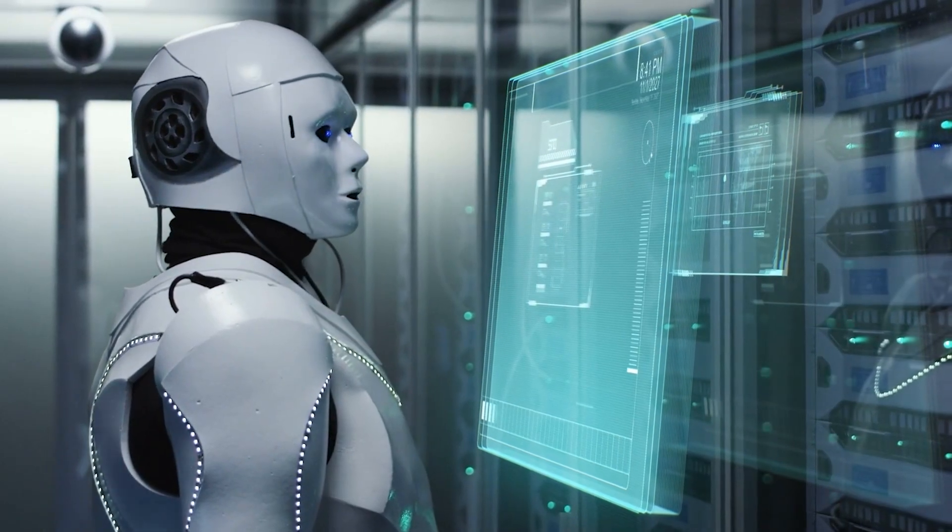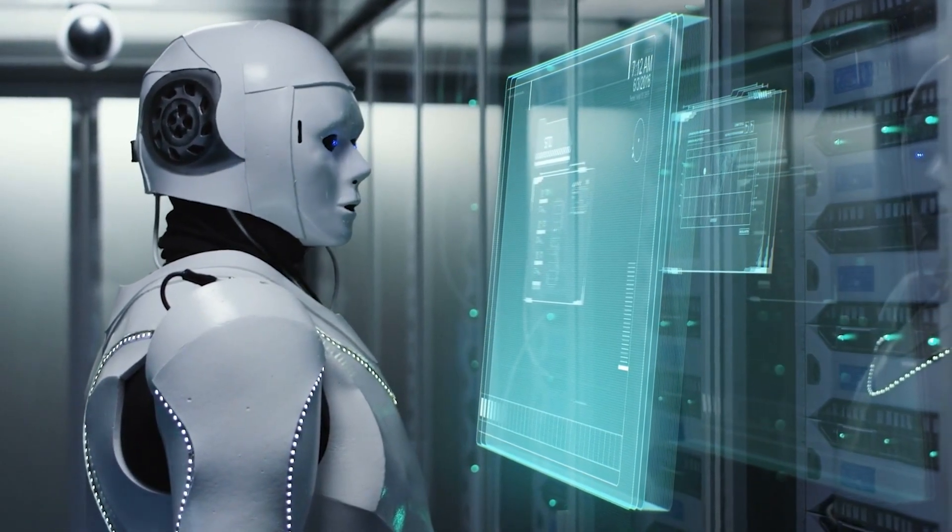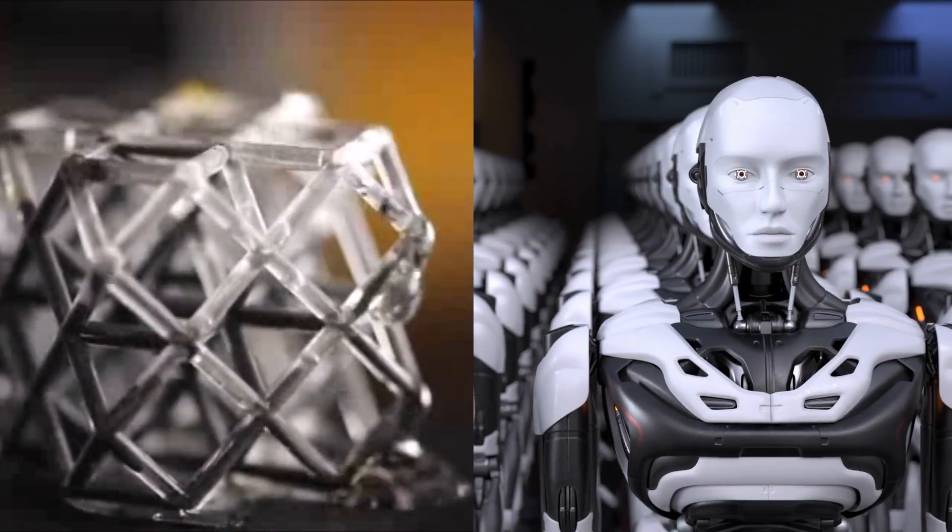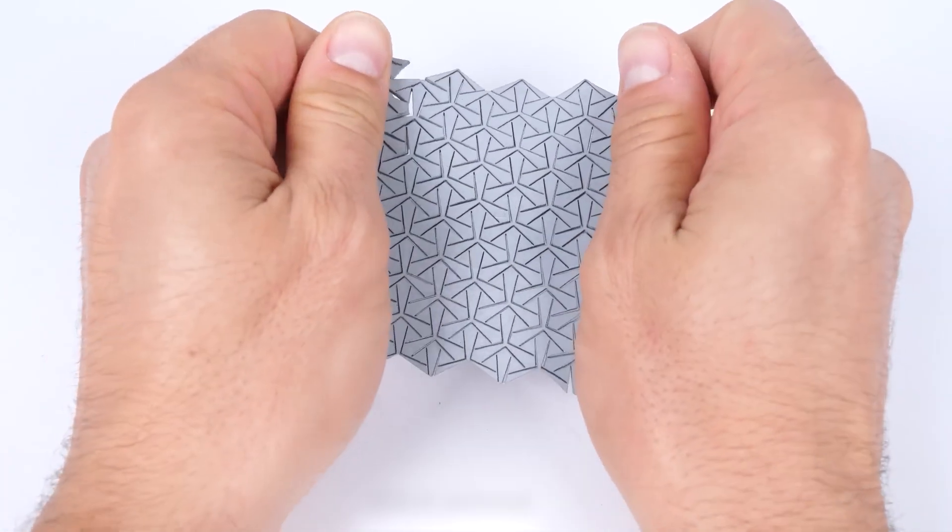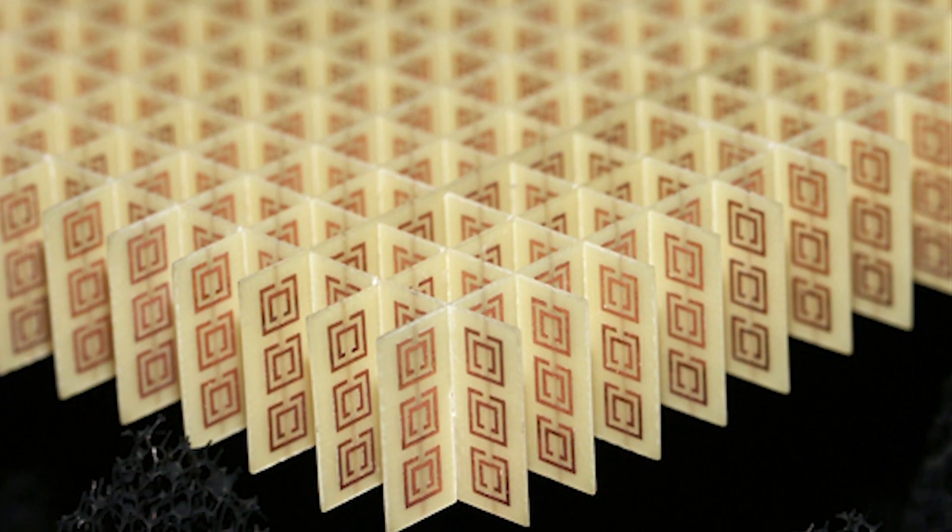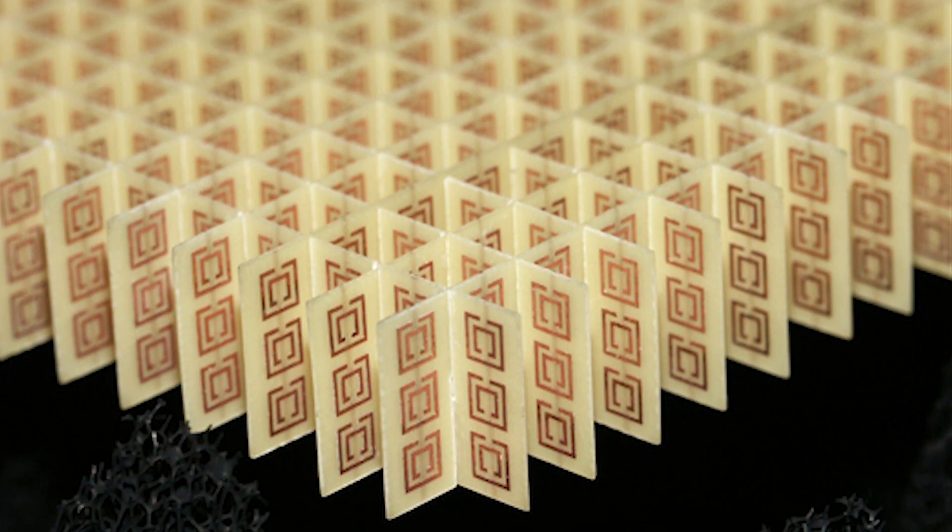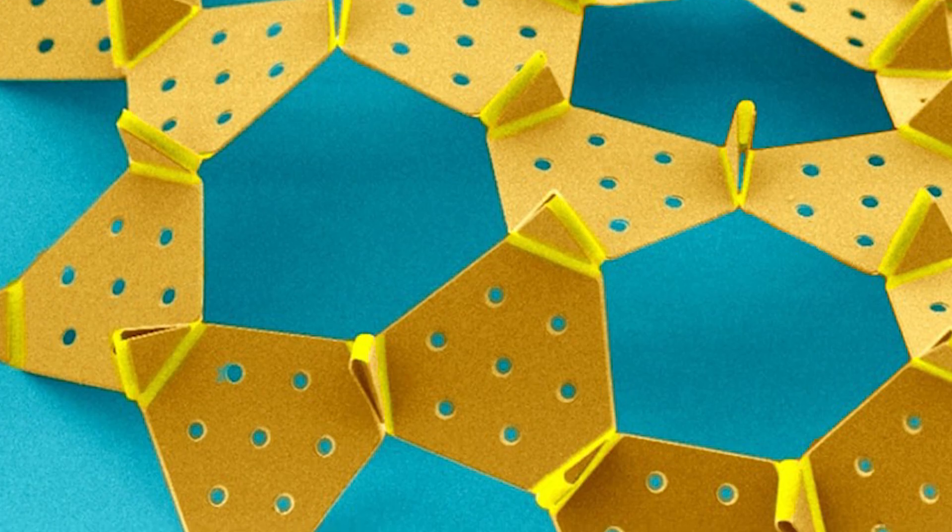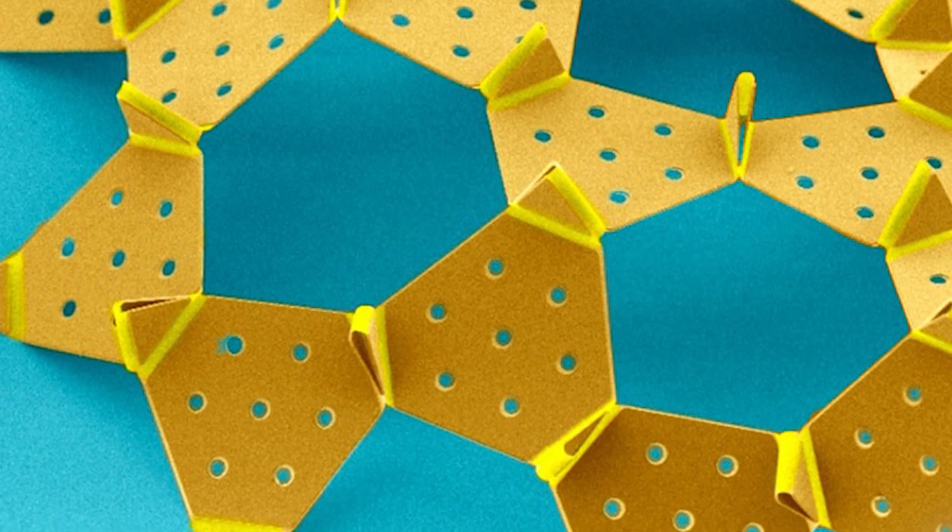Because for the first time, we're seeing a true fusion of two once-separate worlds: robotics and metamaterials. Metamaterials have always been weird in the best way. They are materials that defy expectations. Things that bend light backward, that twist sound, that stretch or shrink when they shouldn't.